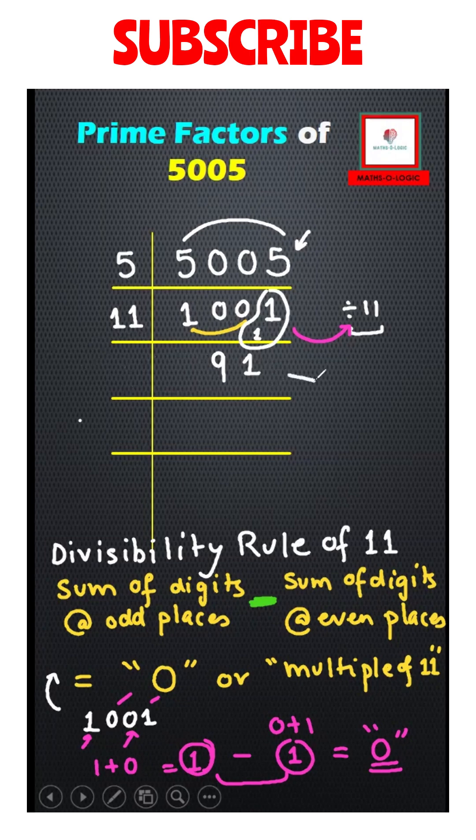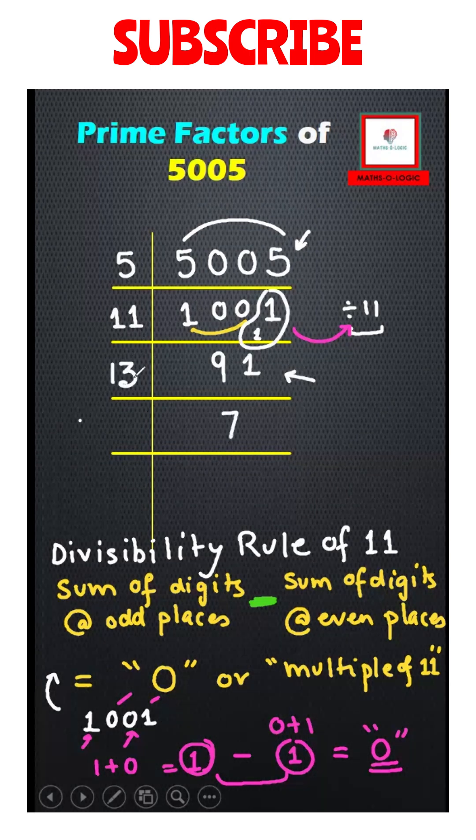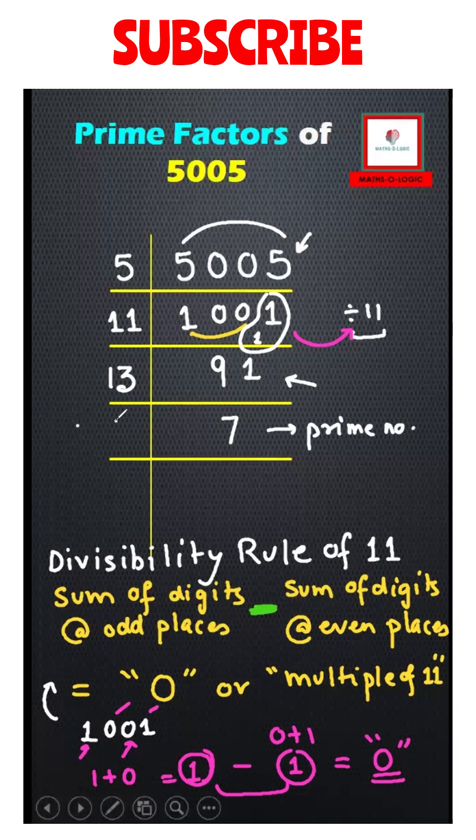Let's move to 91 and find its prime factors. 13 times 7 is 91. Now 7 is left. 7 itself is a prime number. 7 times 1 is 7.